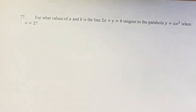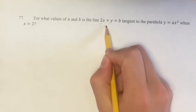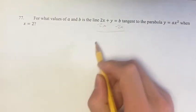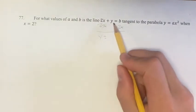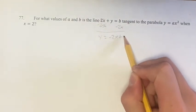So first rearranging this, if we subtract 2x from both sides, we get a more familiar function in slope-intercept form of y equals negative 2x plus b.